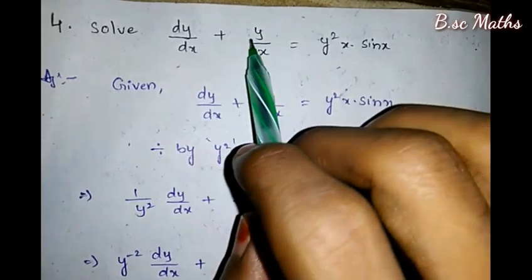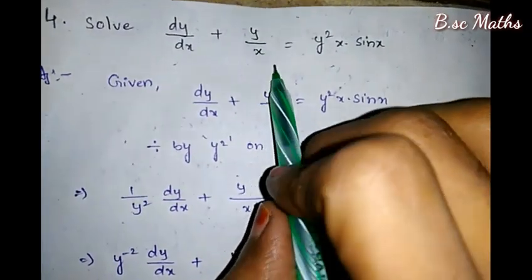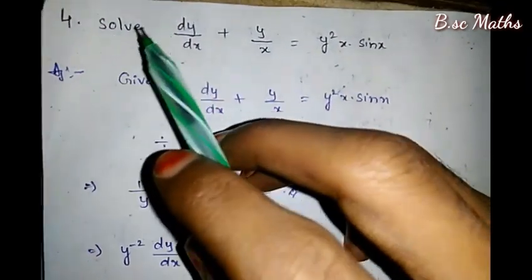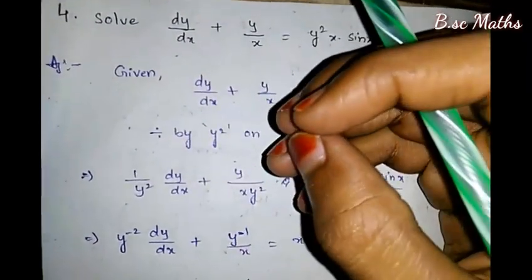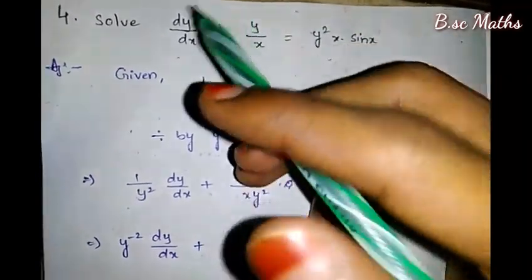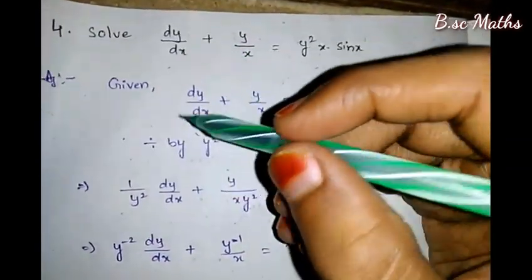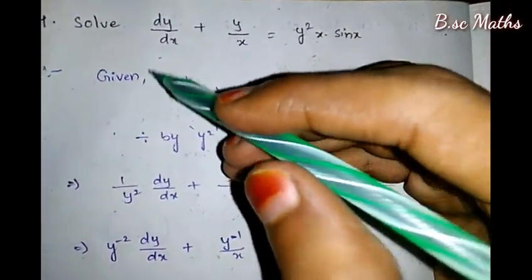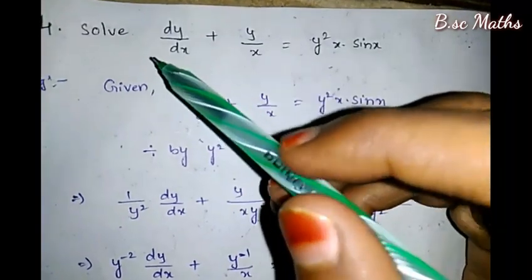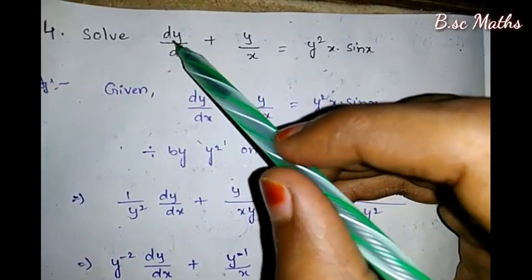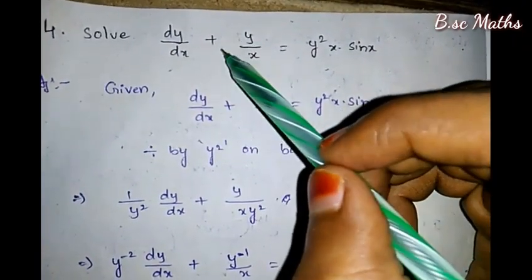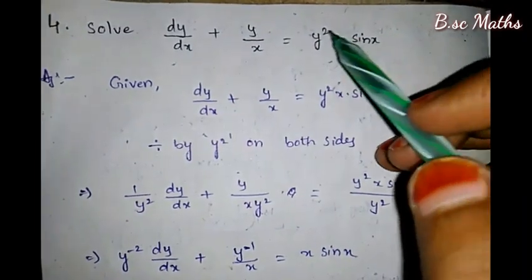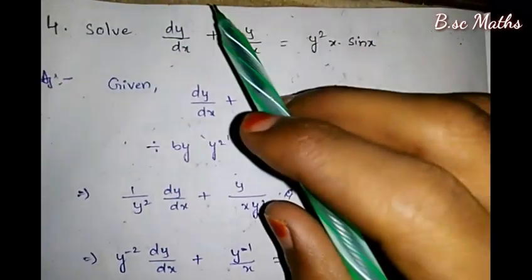Problem 4: Solve dy/dx plus y/x equals y²·x·sin(x). This is a Bernoulli equation. We have dy/dx here and y terms on the right side.